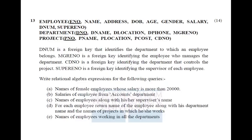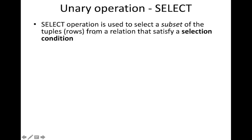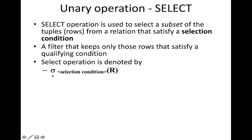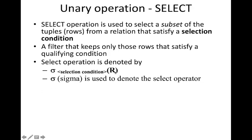Before solving the problems, you need to understand some basic operations in relational algebra. The first operation is the select operation, used to select a subset of tuples or rows from a relation that satisfies a condition. If you want to select only a few rows from a huge table, that is the select operation — it acts like a filter keeping only rows satisfying the qualifying conditions.